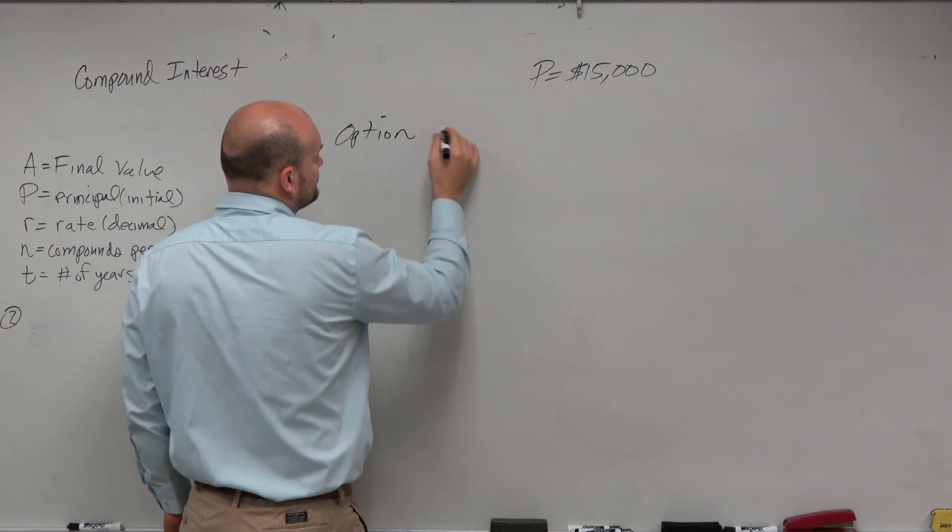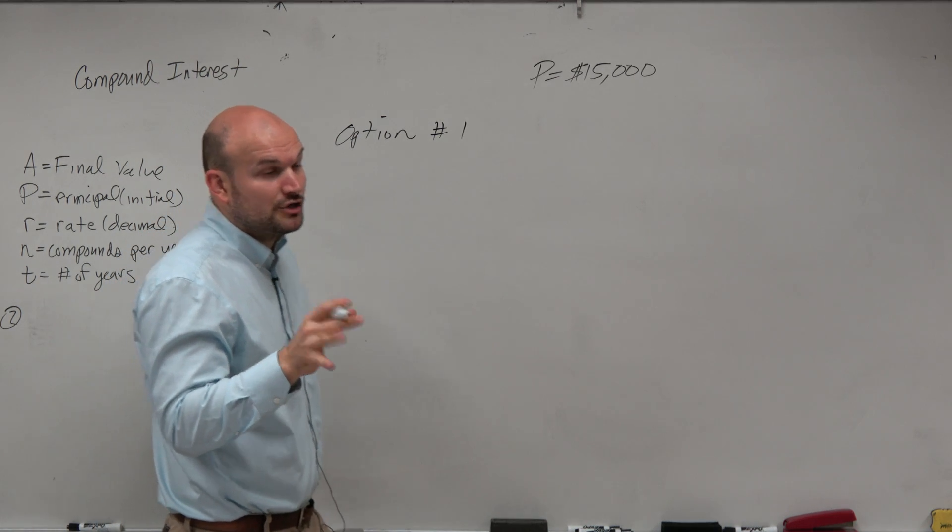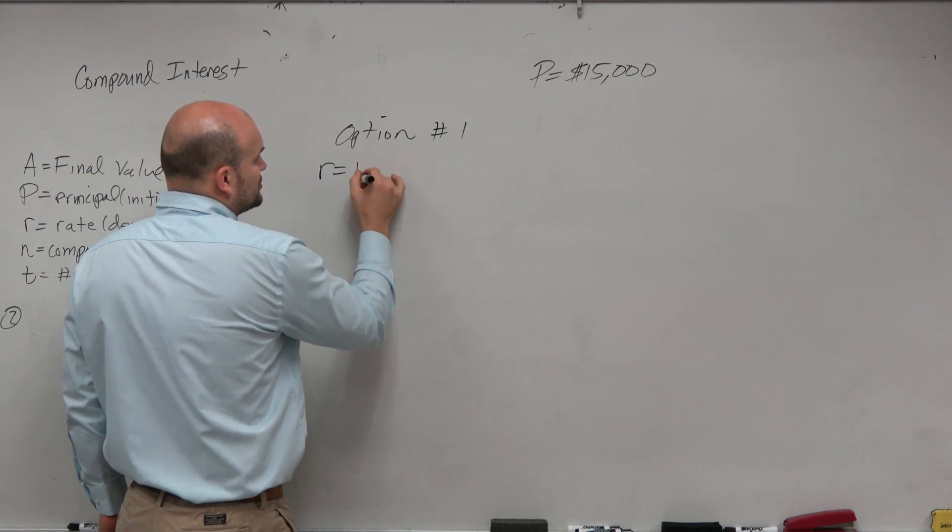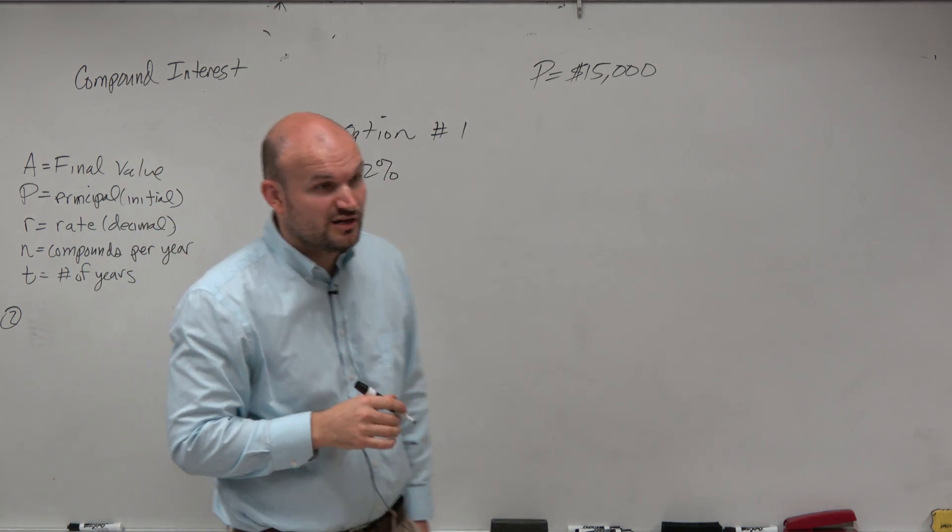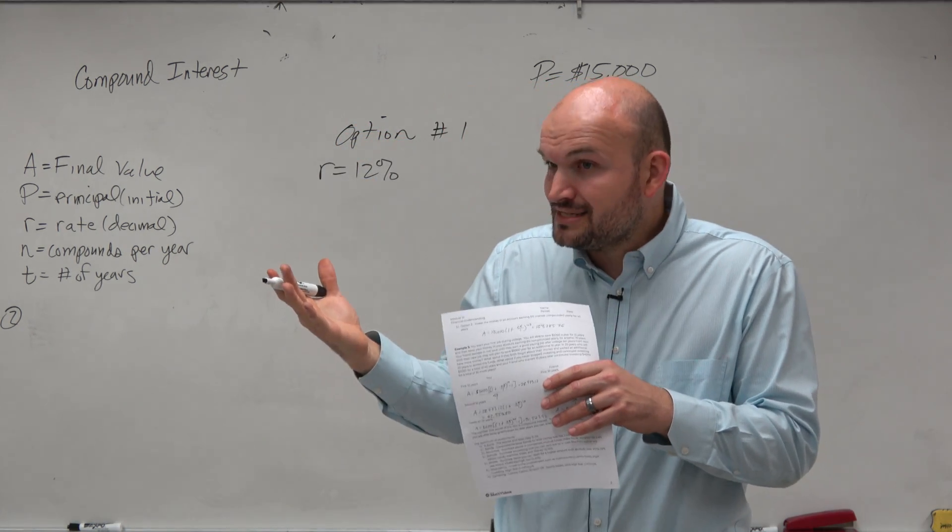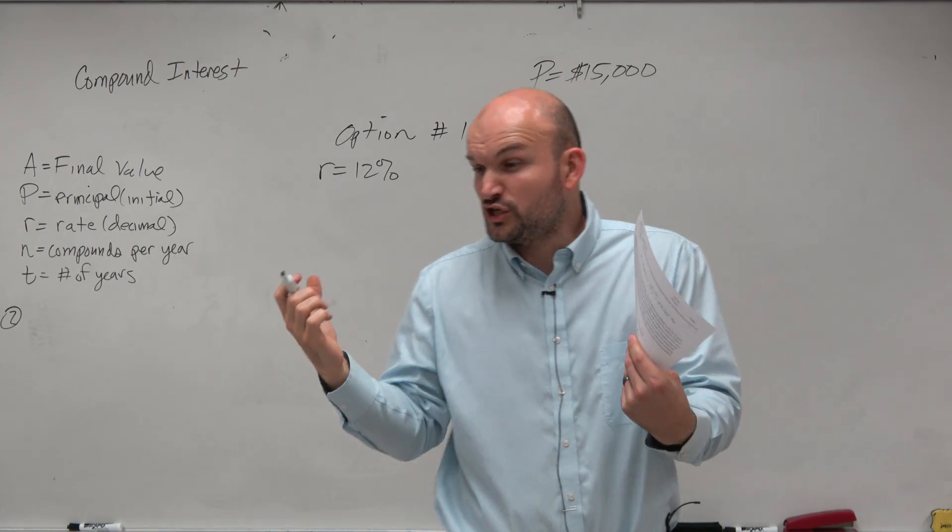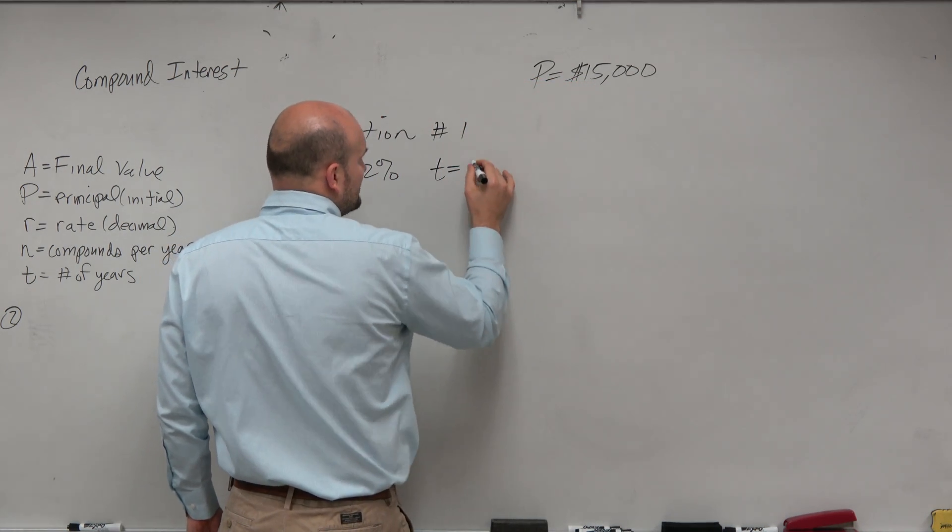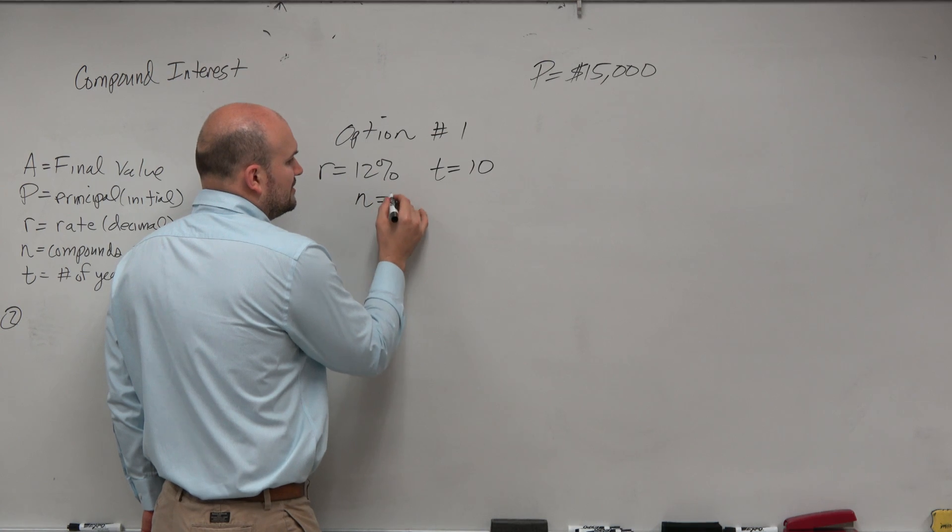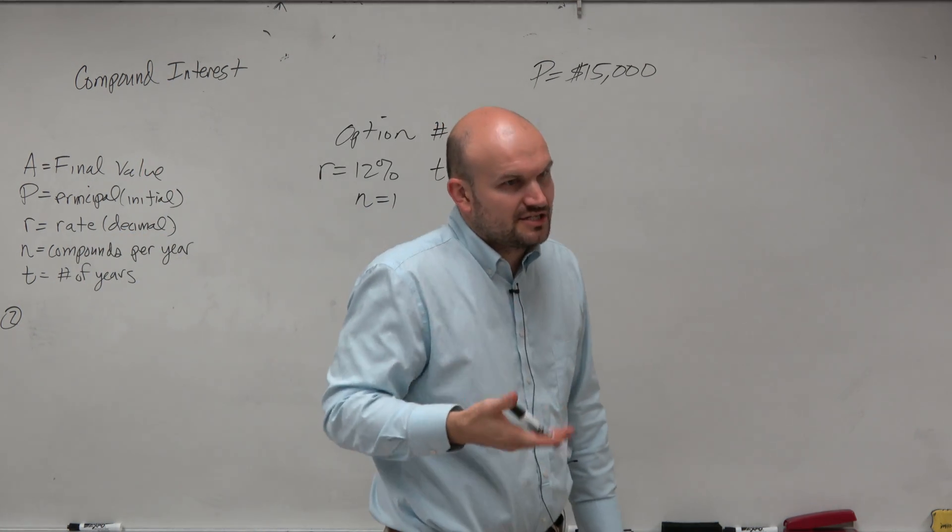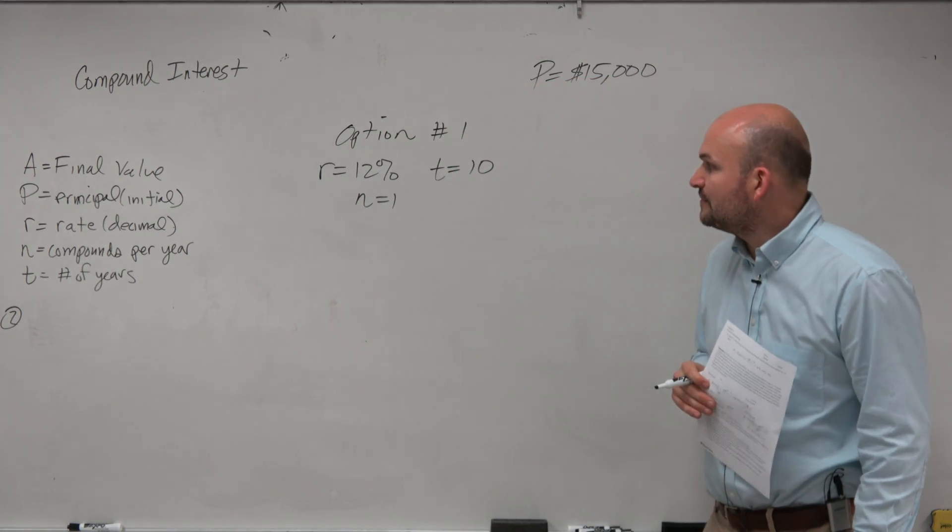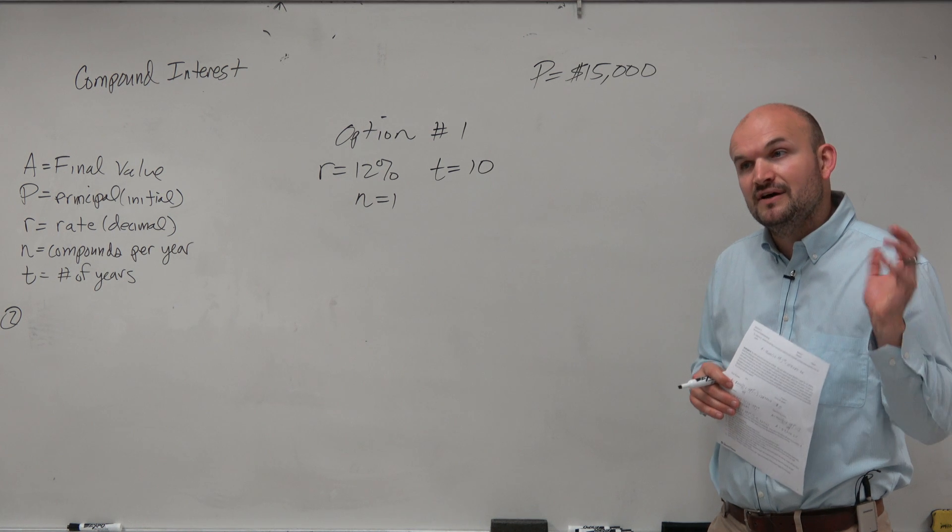Option number one is you are able to find an investment, and I'll talk about how you can earn these type of returns. Your return on your investment here is 12%, pretty high. However, the higher the return on the investment, usually the more risky something is. So we're only going to say that you can earn those returns for 10 years. We're going to compound this yearly instead of monthly. For this, your account is only going to be compounded yearly.